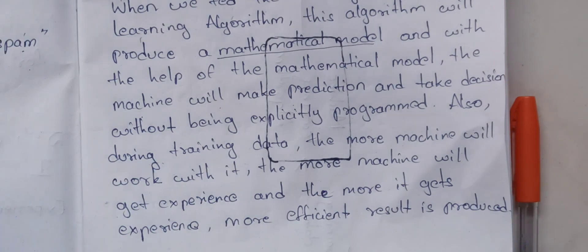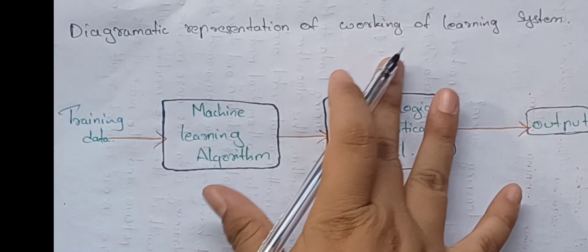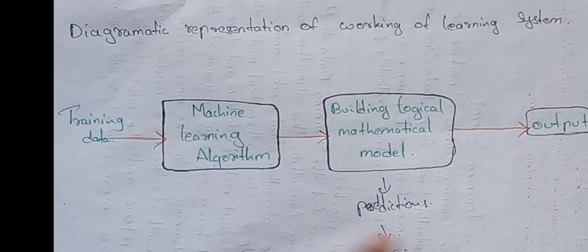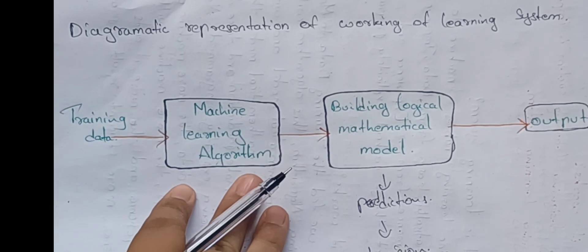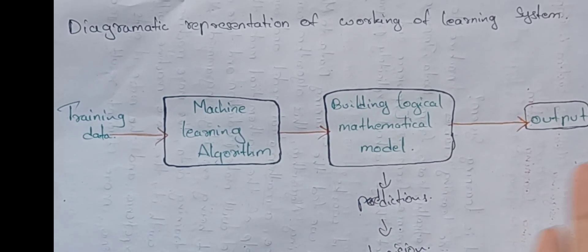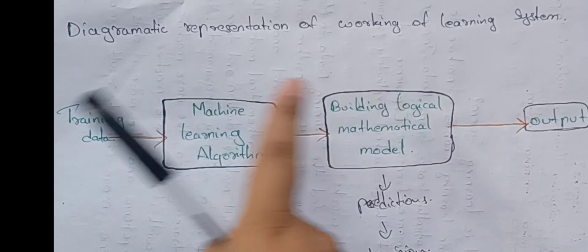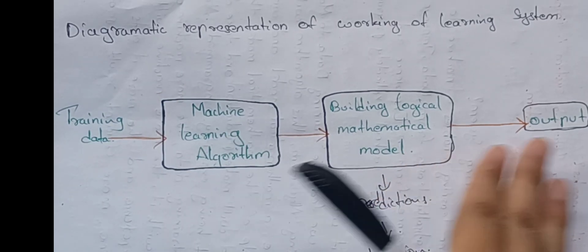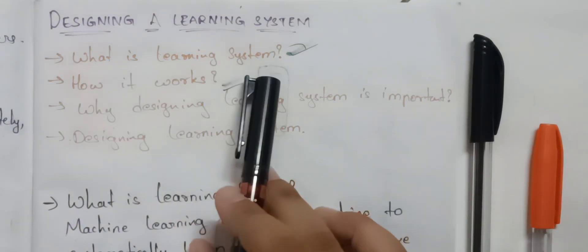Here is the first data. We create a mathematical model, make a prediction, and then make a decision. Here is the diagrammatic representation of how a learning system works. First, we have training data and a machine learning algorithm. We create a mathematical model, then make predictions and decisions to produce an output.